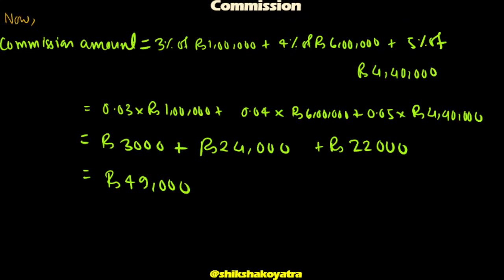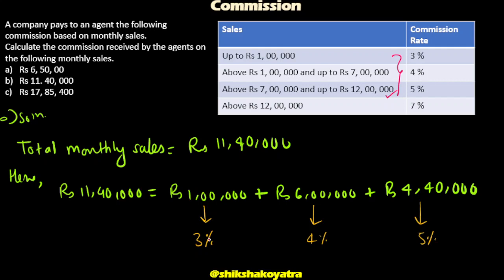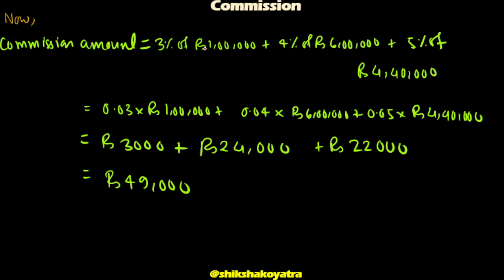Commission amount equals 3% of 1,00 plus 4% of 6,00 plus 5% of 4,00. That is 0.03 multiplied by 1,00 plus 0.04 multiplied by 6,00 plus 0.05 multiplied by 4,00, and the calculation gives 49,000.